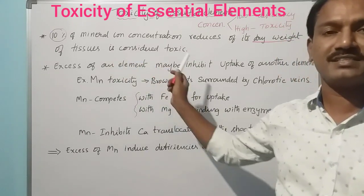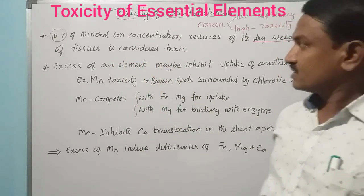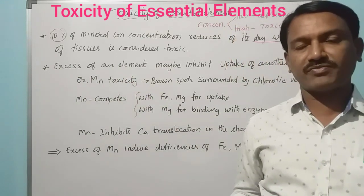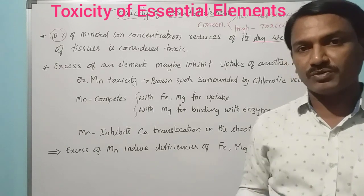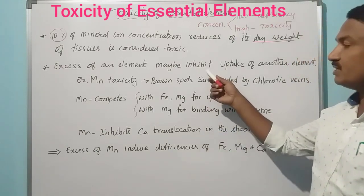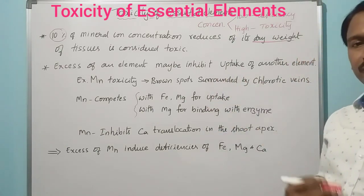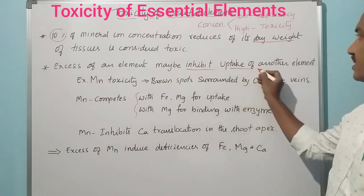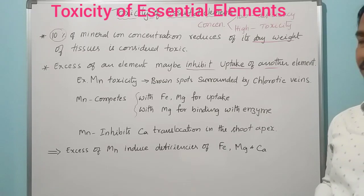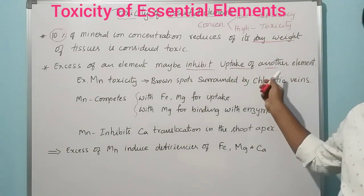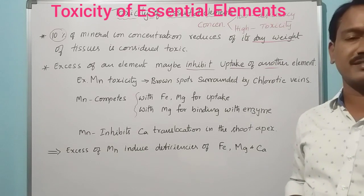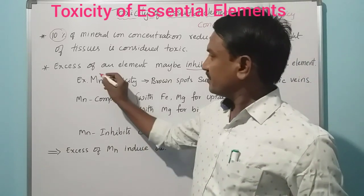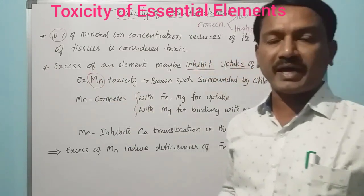If an element is present in excess, it may lead to translocation inhibition or inhibit the uptake of another element. So excess of one element can inhibit the uptake of another element in plants. A good example of this is manganese.